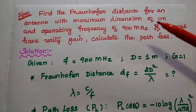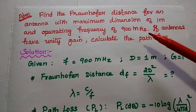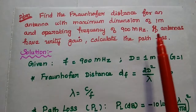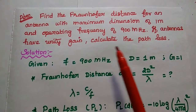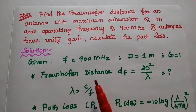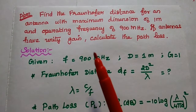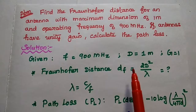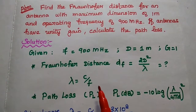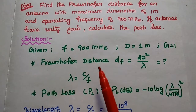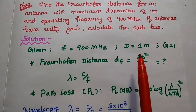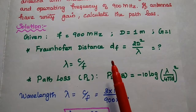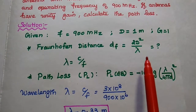Next problem: find the Fraunhofer distance for an antenna with a maximum dimension of 1 meter and operating frequency of 900 MHz. If the antennas have unity gain, calculate the path loss. The given data: operating frequency is 900 MHz, dimension is 1 meter, and gain is 1. We are going to find the Fraunhofer (far-field) distance and calculate the path loss. The Fraunhofer distance can be obtained using the formula: df = 2d² / λ.